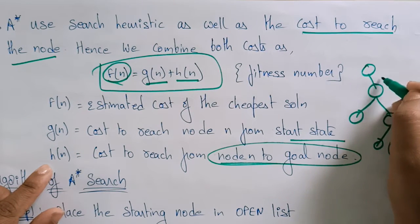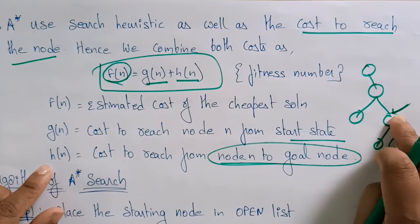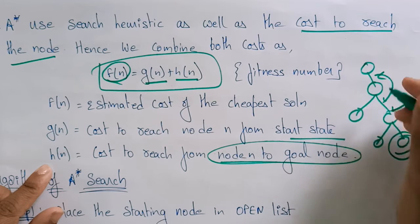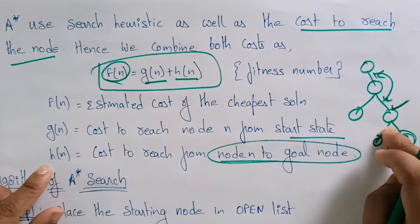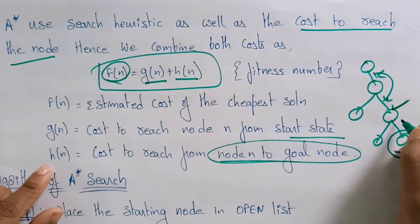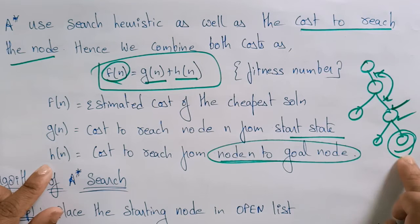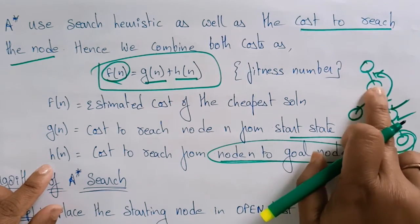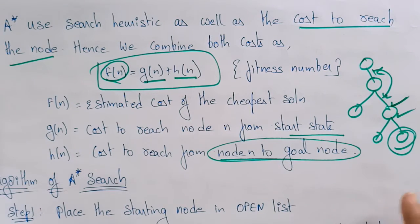Suppose you are at this position on the graph. g(n) is the combination of this path and this path — 1 plus 2 — that is g(n). And h(n) is the heuristic value: the cost to reach the goal node, which is given for each and every node.